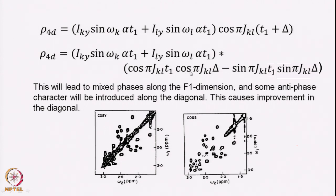The contributions of the two line shapes depend on the value of delta chosen, which in turn depends on your T2 relaxation — how much decay of signal you can afford. Remember, delta is a fixed time period the same for every T1 increment, so the signal will decay during that period. Depending on how much loss you can afford, you choose delta, and the product π·JKL·δ determines the contributions of the two terms to the diagonal peak. As shown in the experimental example here, there is a significant improvement — many diagonal peaks have vanished and peaks close to the diagonal are now much clearer.